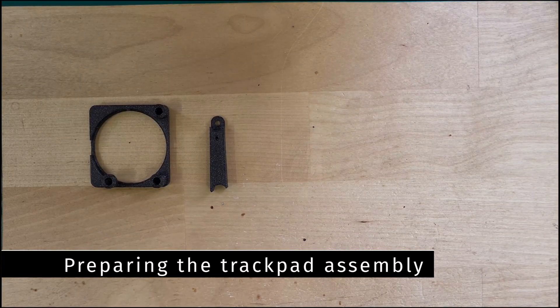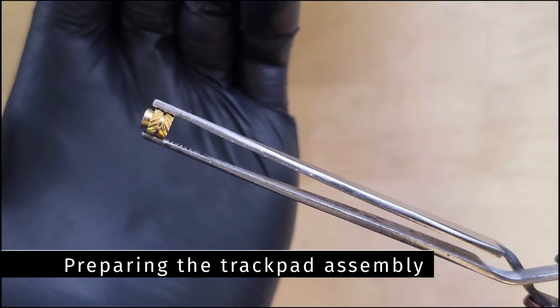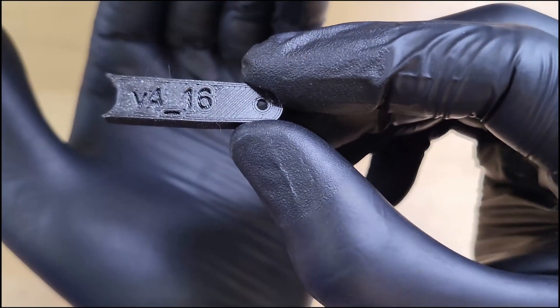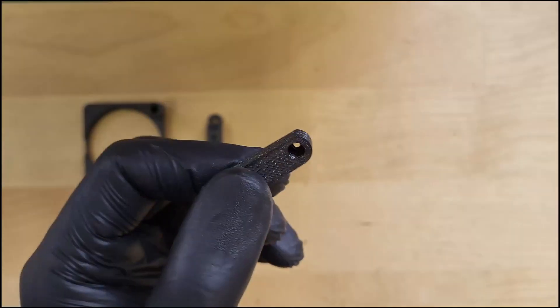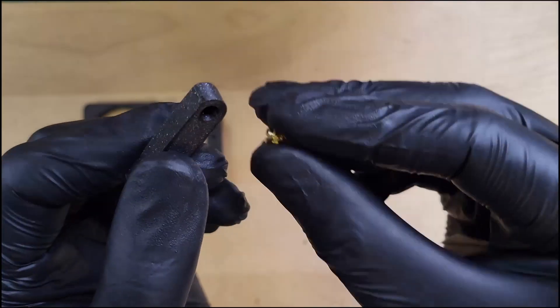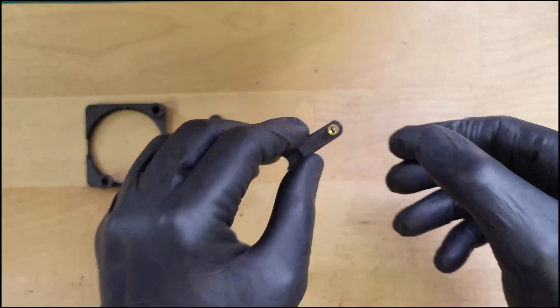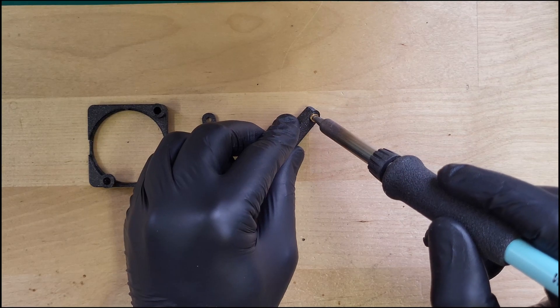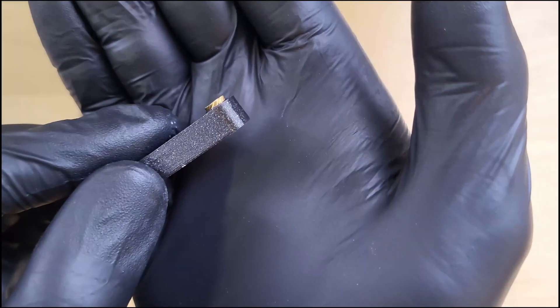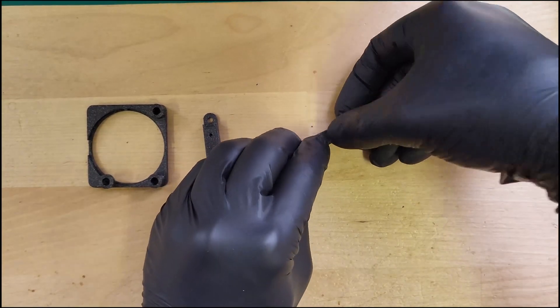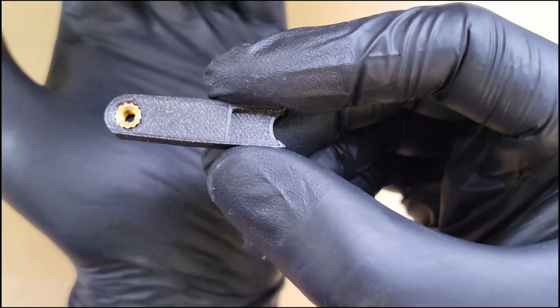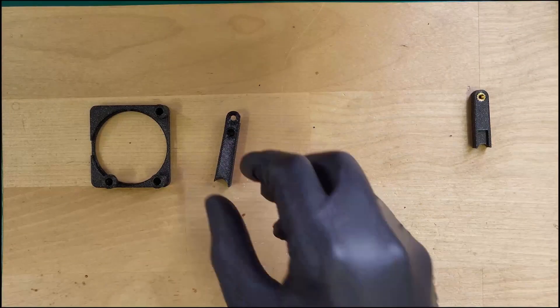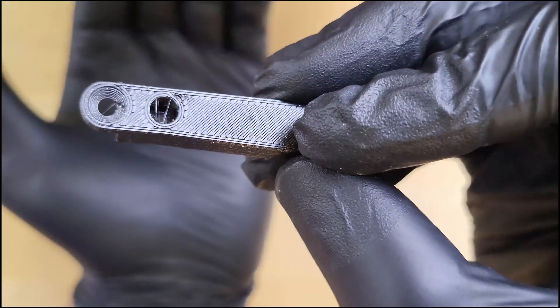We will now prepare the 3D printed assembly for the trackpad. Grab a screw insert and the 3D part with a version number on it. Install the screw insert with the small side inside the 3D part. Then gently push the insert into the 3D part with your soldering iron. Go two-thirds of the way in and let gravity do the work. Then flip it and push it against a flat surface. Now do the same process with the four other screw inserts.